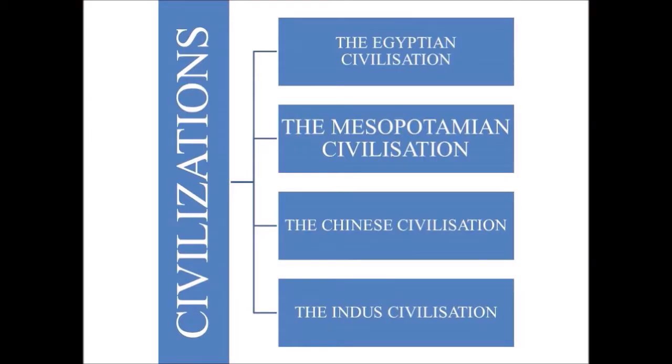Different civilizations flourished in different regions of the world. The civilizations were the Egyptian civilization, Mesopotamian, Chinese, and Indus civilization.